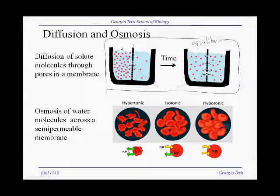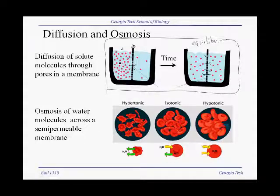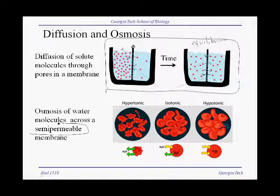Now, how do we illustrate osmosis — where do we get osmosis from this diffusion process? Let's go back to this top figure, but now the barrier here in the middle — let's say that this barrier is now impenetrable, it's impermeable to these red solute molecules. However, it's not a solid barrier; it is what we call a semi-permeable barrier, meaning that water molecules can cross, but these solute molecules cannot.